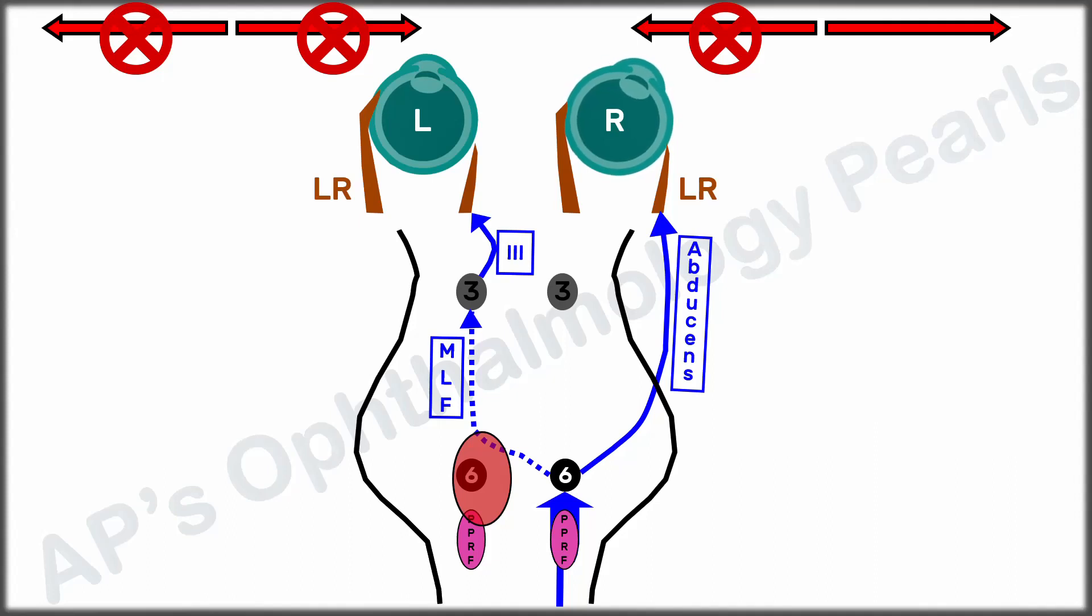This combination of a horizontal gaze palsy with an ipsilateral INO is termed Fischer's one and a half syndrome, or simply one and a half syndrome.